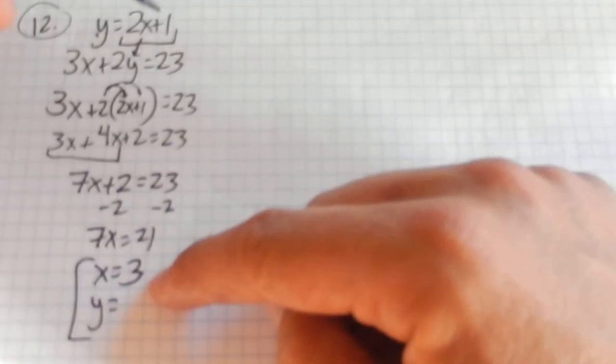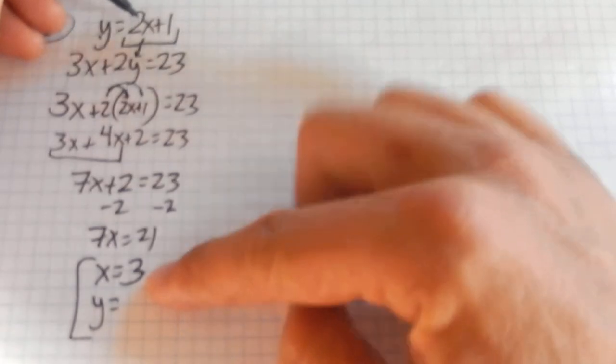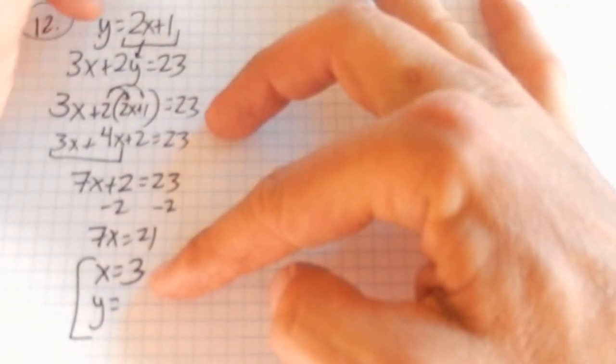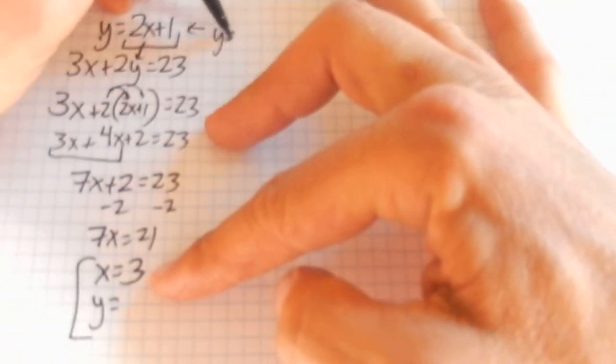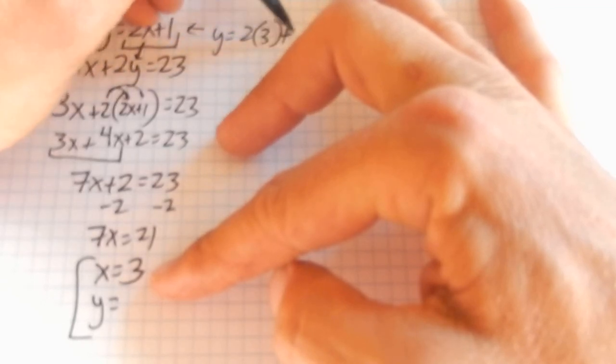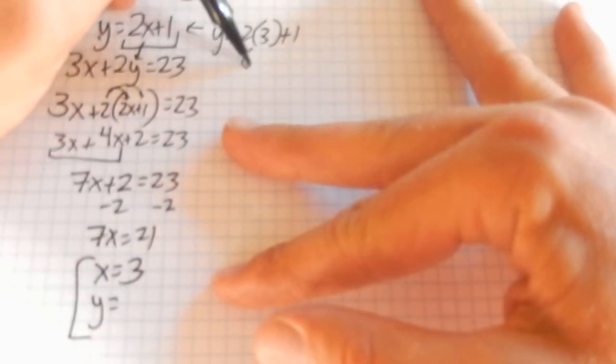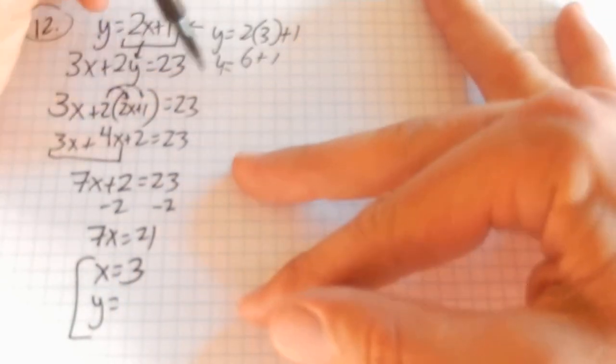So if x is 3, now that I know what it is, I can take it and plug it back into one of the equations. And notice if I plug it into this equation, y equals 2 times 3 plus 1. 2 times 3 is 6. Looks like y is 7.